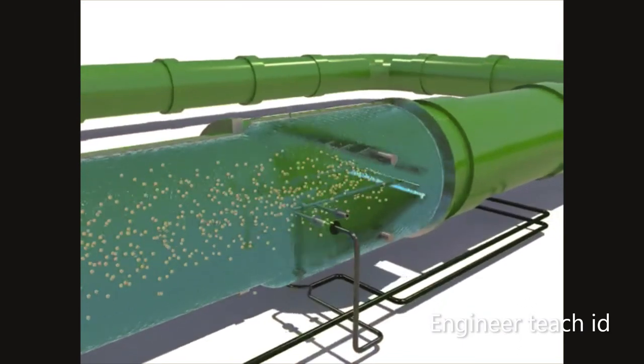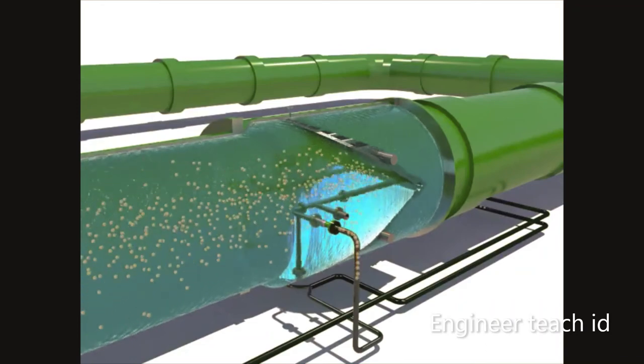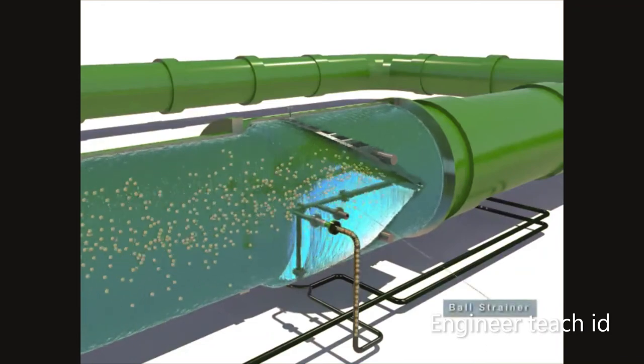Balls which came out from the tube are collected to the condenser tube ball collector after being filtered out at the ball strainer.